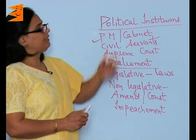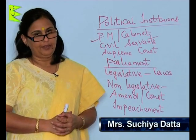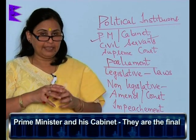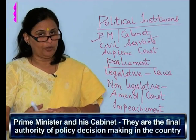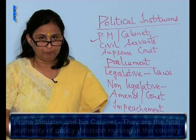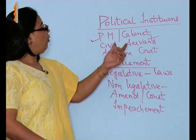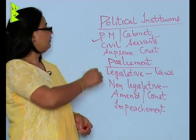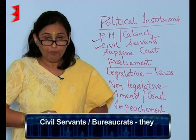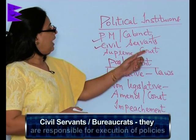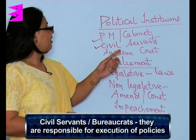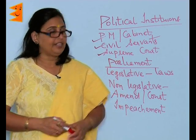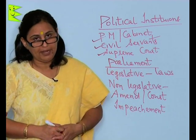Let's talk about the political institutions in India. The first is the Prime Minister and his cabinet, who are the final authority of policy decision-making in the country. All policies are made by the Prime Minister and his Union Cabinet. Then we have the civil servants, known as bureaucrats, who are responsible for the execution of these policies. We also have the Supreme Court of India, which acts as a safeguard against all irregularities that might occur in the working of the government.